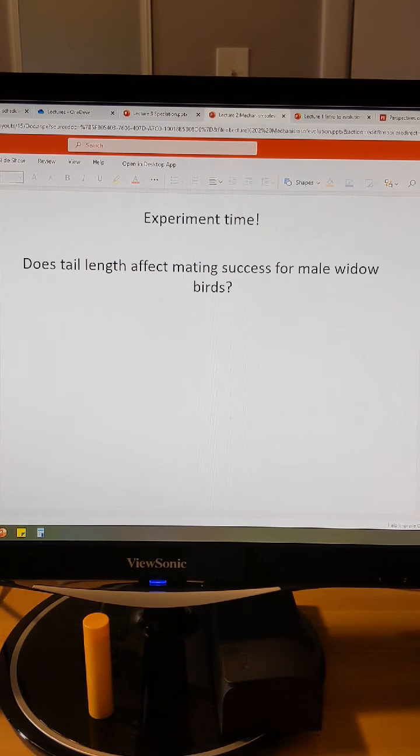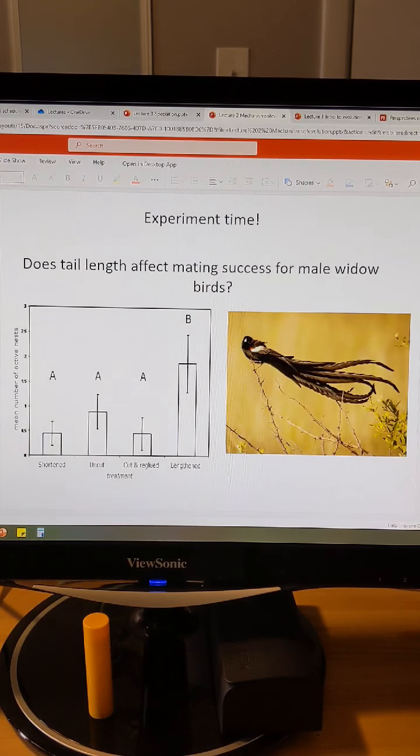The way that researchers tested this was they took male widow birds, and they put them in different groups. In one group, they cut off their tails, so they made the tails shorter. In another group, they left the tails the original length. And in a different group, they took the tails that they cut off the original birds, and they glued them on to make even longer tails. Then they measured which males produced eggs in the number of nests. So if you had one nest, that means that you had one mating success. If you had five nests, that means that you had five different mating successes.